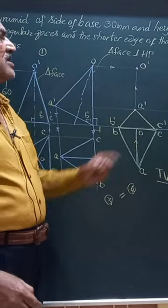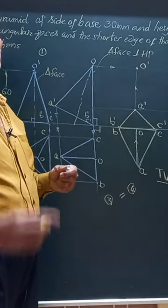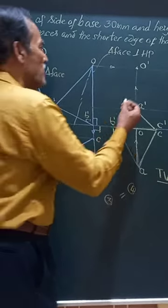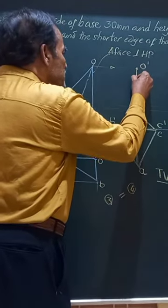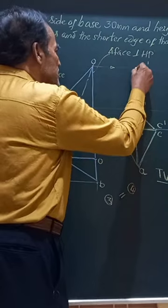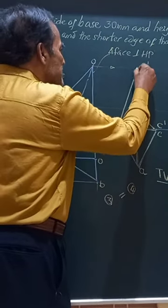So friends, we have to join this vertex O dash to all the corners. I am going to join O dash to A dash, O dash to B dash, O dash to C dash.